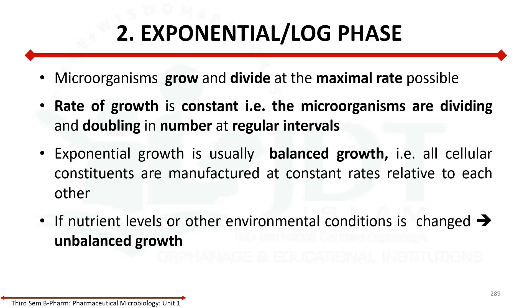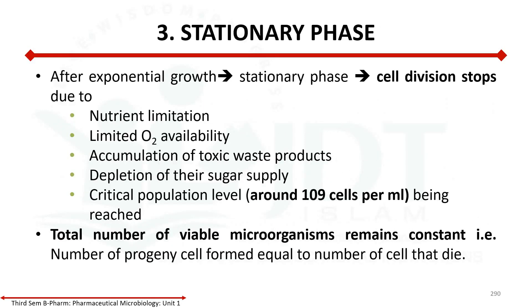If the nutrient level or other environmental conditions change, it leads to unbalanced growth. The next phase is stationary phase. Here, cell division stops due to different conditions: nutrient limitation, limited oxygen availability, accumulation of toxic waste products, depletion of sugar supply, and a critical population density around 10⁹ cells per ml. The total number of viable microorganisms remains constant because the number of cells dividing equals the number of cells dying.